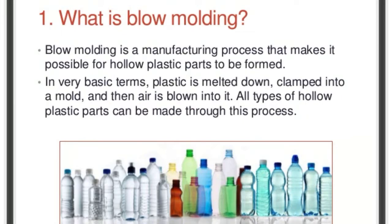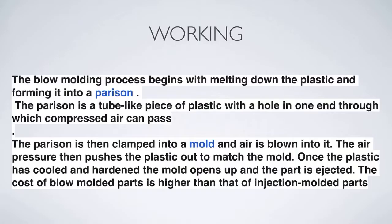Almost all types of hollow plastic parts can be made through this process. The blow molding process begins with melting down the plastic and forming it into a parison. Parison کیا ہوتا ہے — یہ basically jelly shape میں یا semi-solid plastic کا ایک tube ہوتا ہے۔